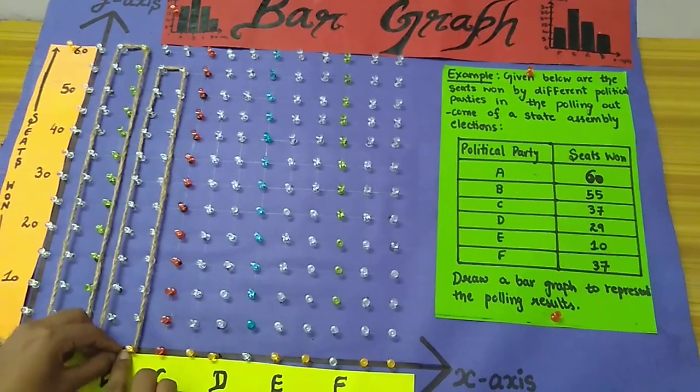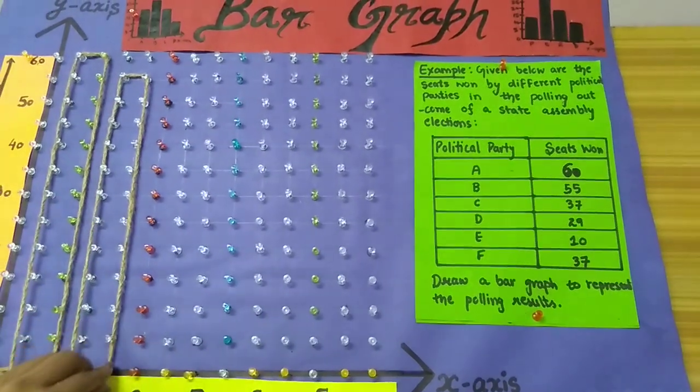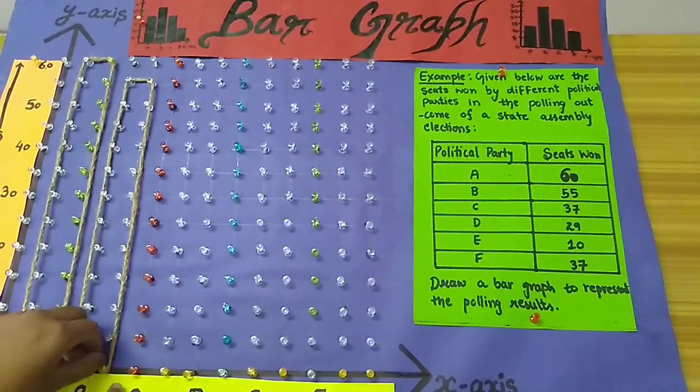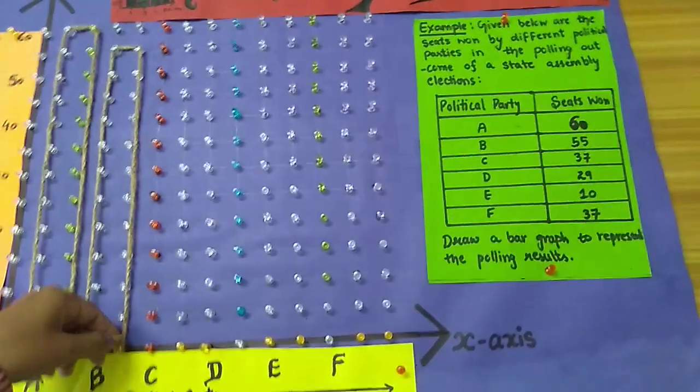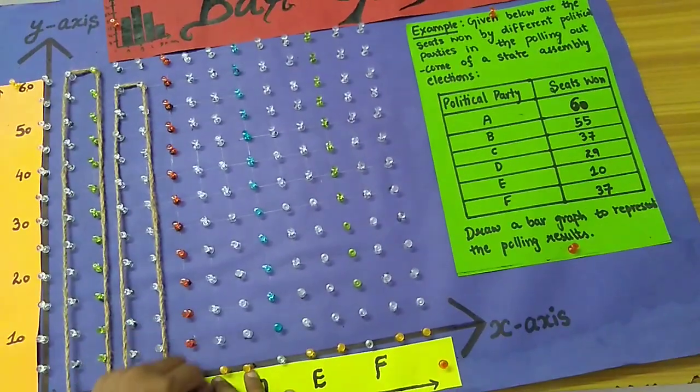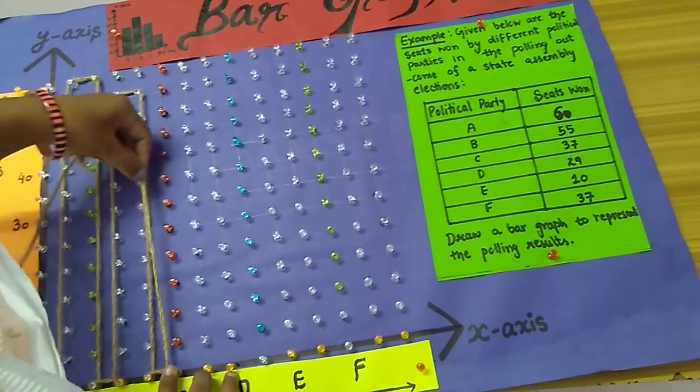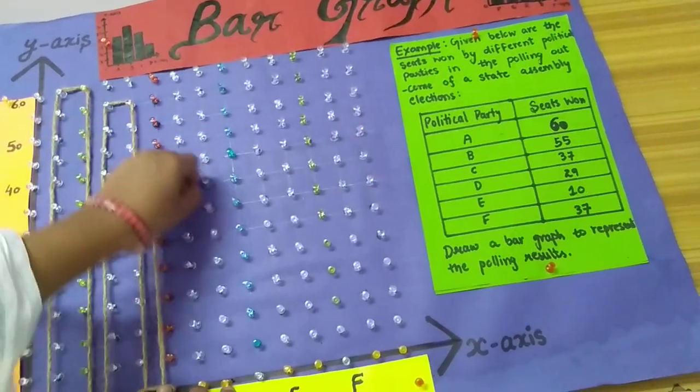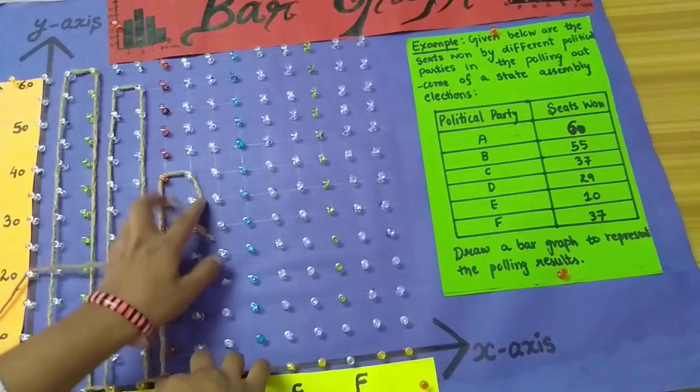Similarly, I will draw it for party C. And C party has 37 seats. Here is my approximately 37 seats.